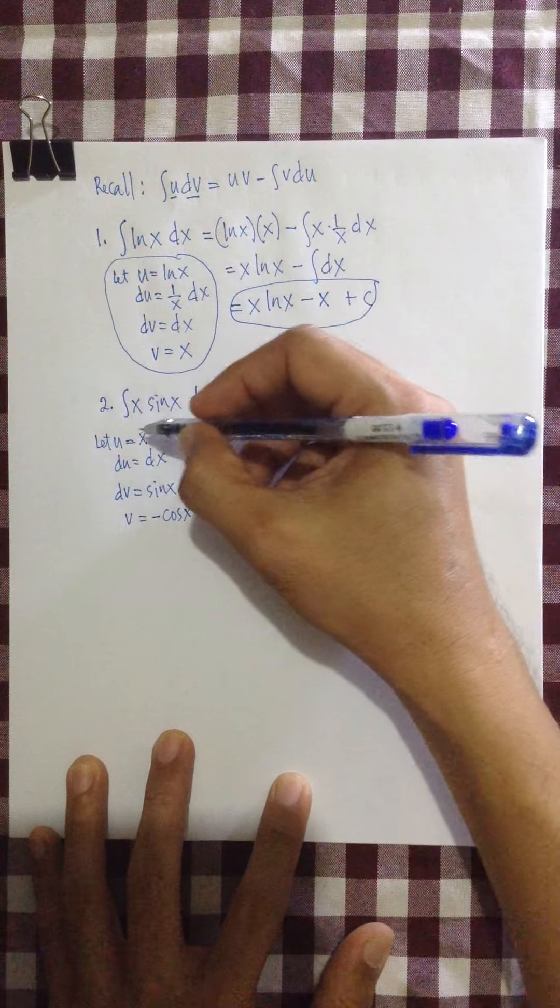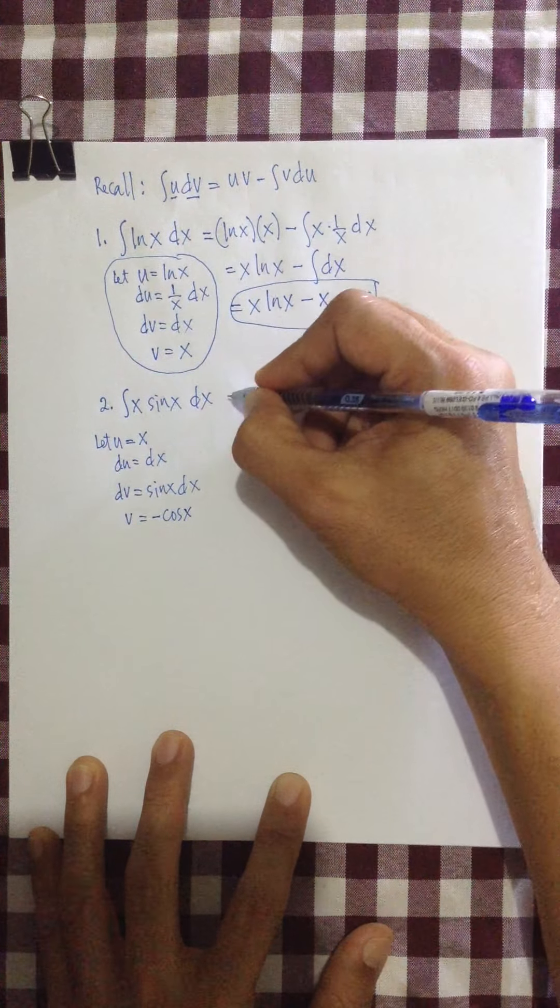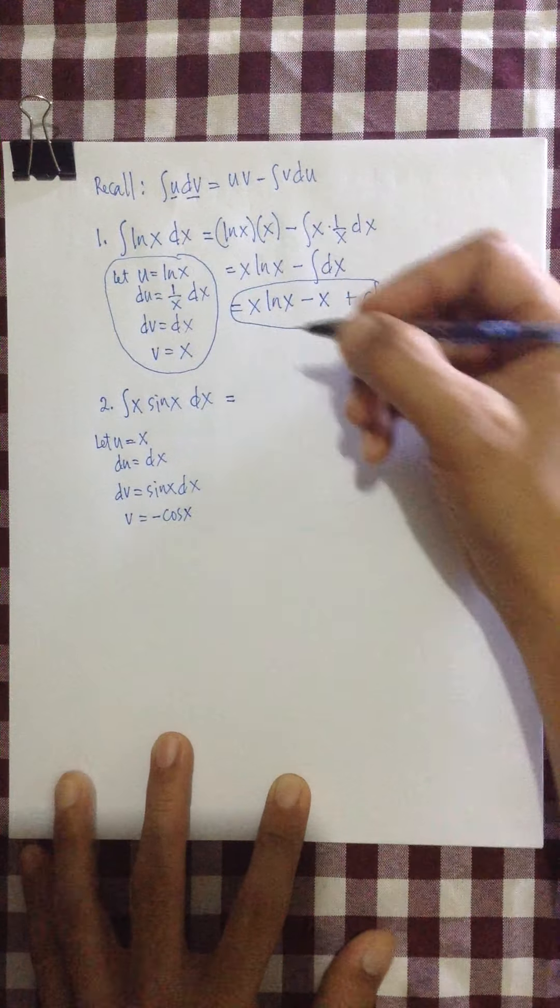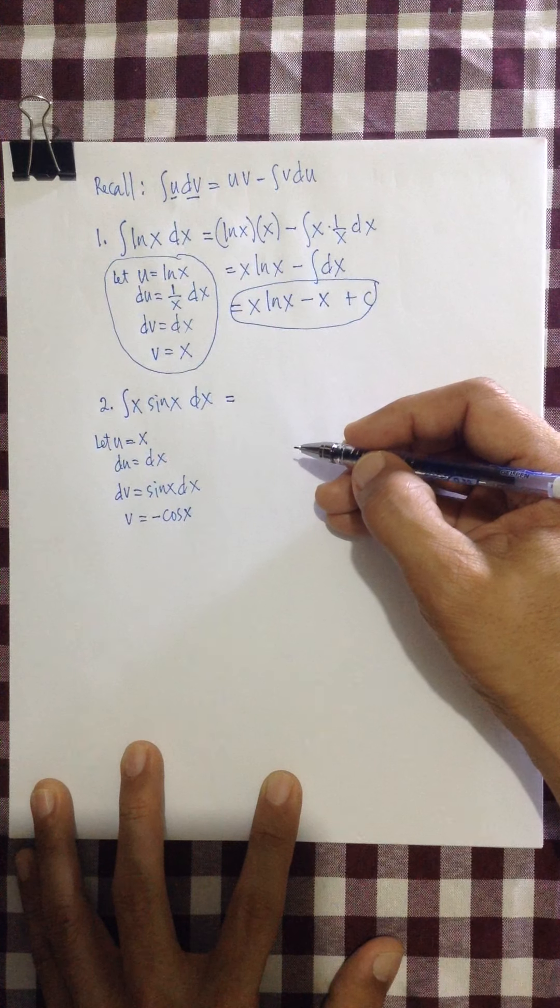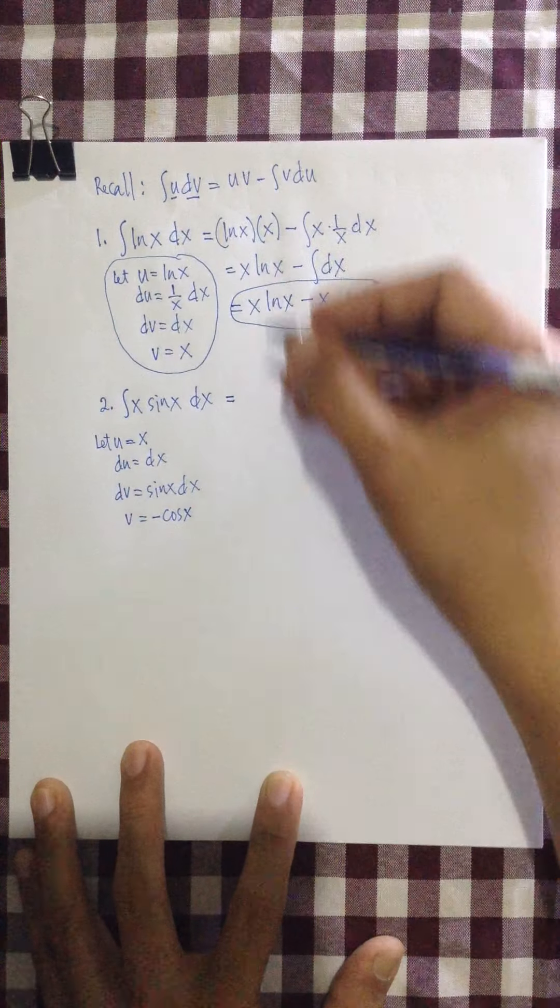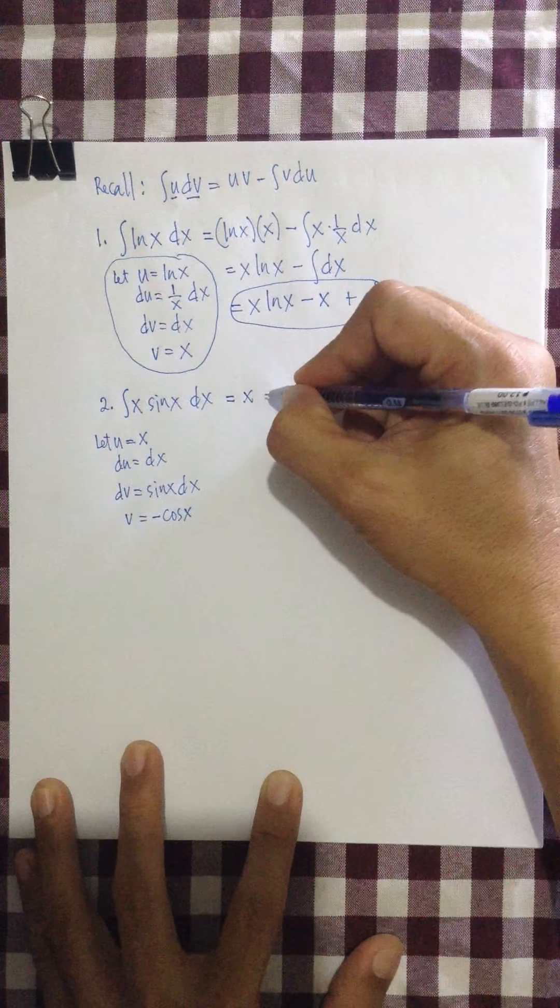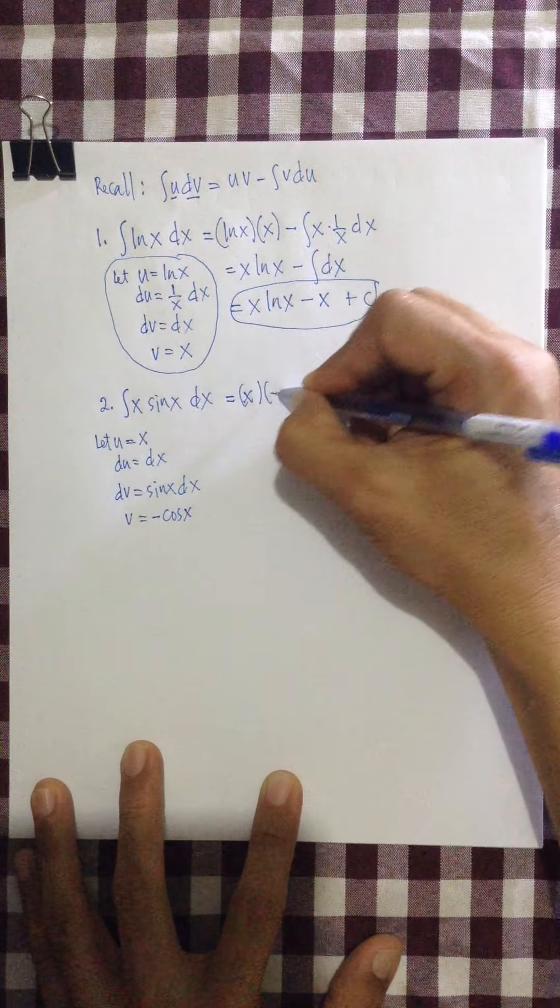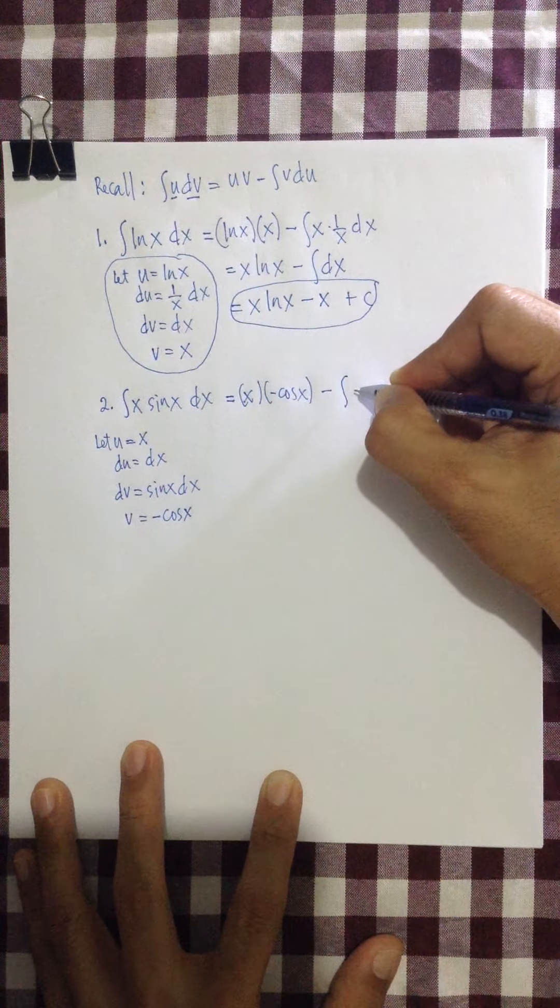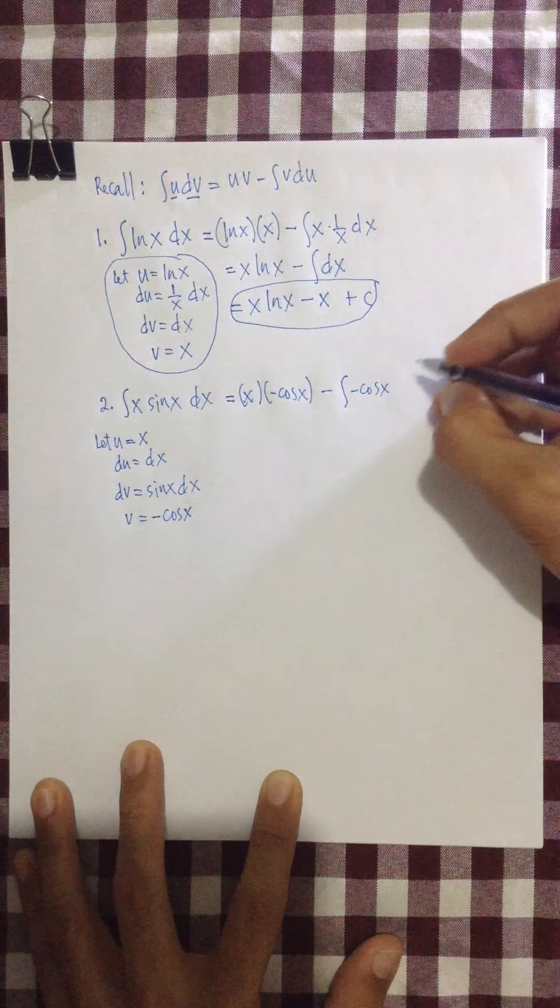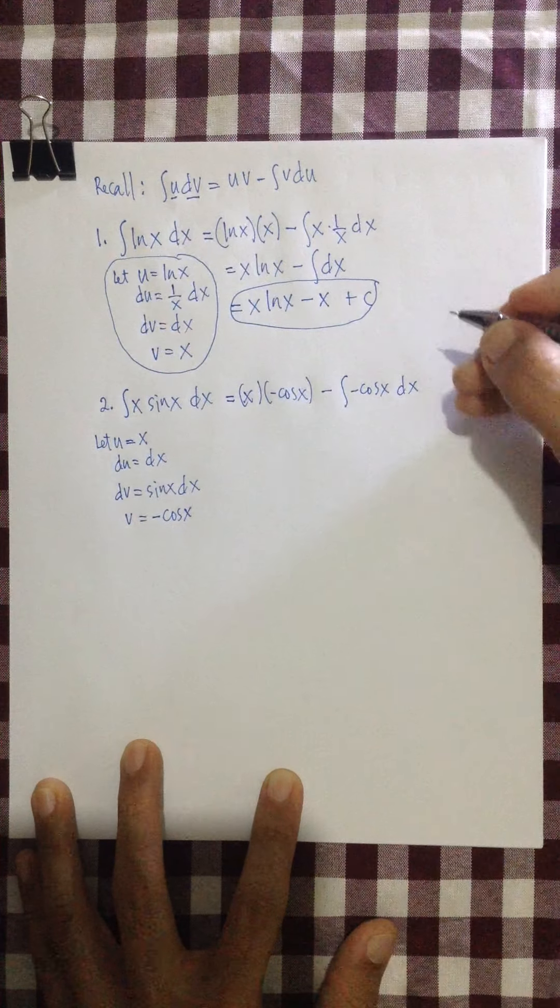So we have the value for our... We have that expression for u, du, dv, and v. We're now going to substitute this to the integration by parts formula. Following that, we have u, which is x. We have v, which is negative cosine x. Then minus integral of v, which is negative cosine x. Then du, which is dx.